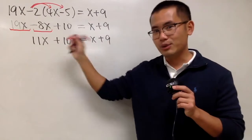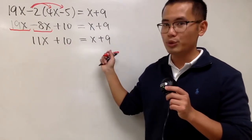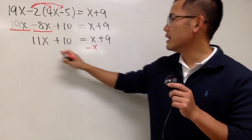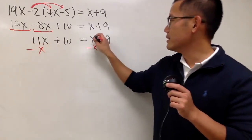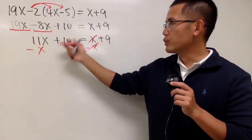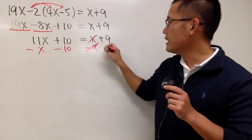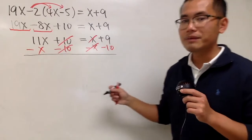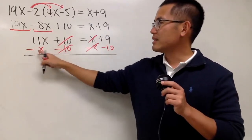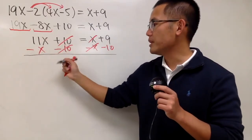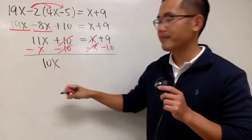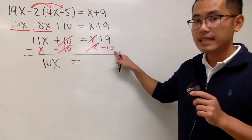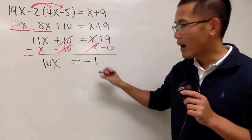Now let's move the x to the left-hand side and move the number to the right-hand side. To get rid of this x, we will minus x on both sides — this and that will cancel. And to get rid of the 10, we minus 10 on both sides so that this and that will cancel. So 11x minus 1x is 10x, and that's equal to 9 minus 10, which is negative 1.